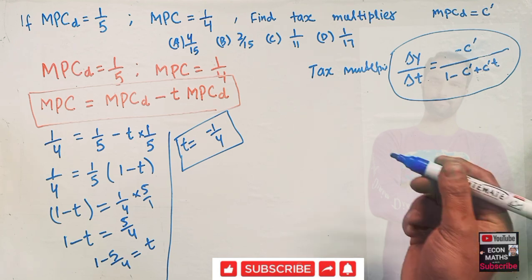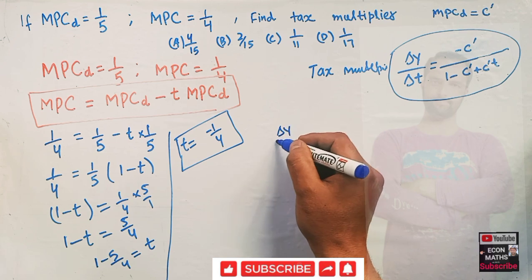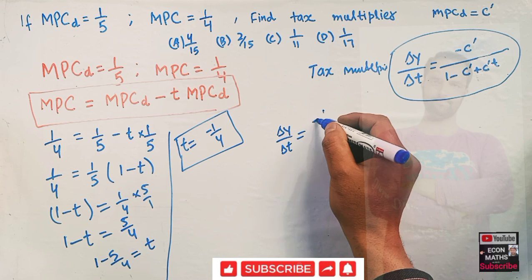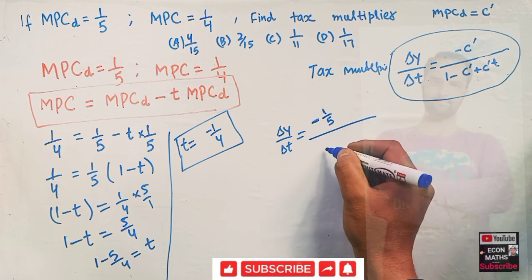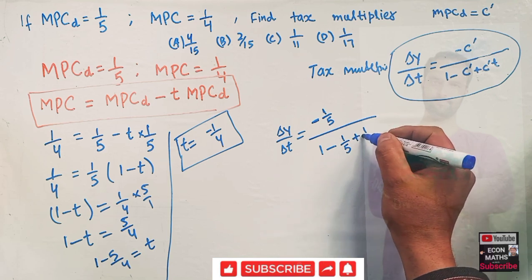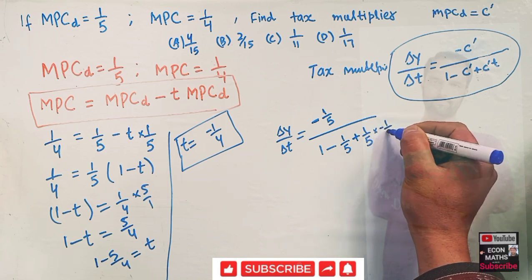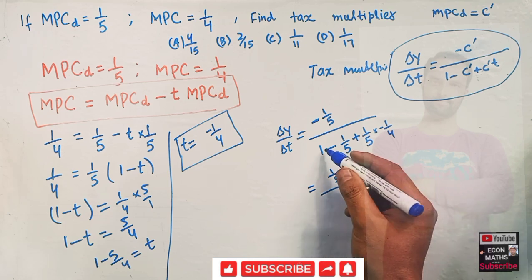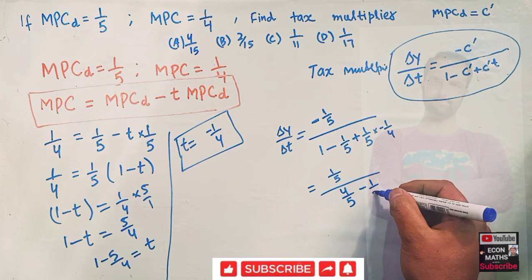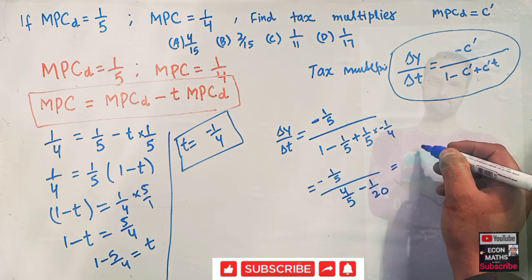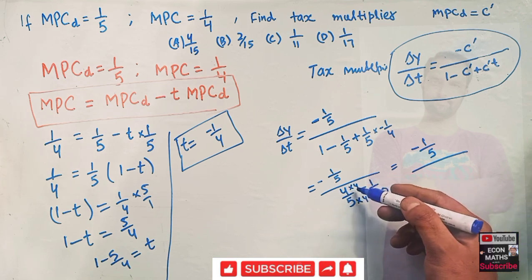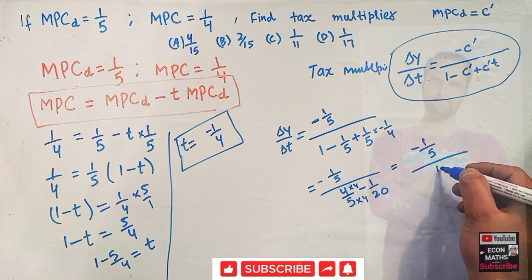Using this formula, ΔY/ΔT = -MPCD / (1 - MPCD + MPCD·T). MPCD is 1/5, and T is -1/4. So the numerator is -1/5. The denominator is 1 - 1/5 + (1/5)(-1/4) = 4/5 - 1/20. Making the denominator the same: 16/20 - 1/20 = 15/20.